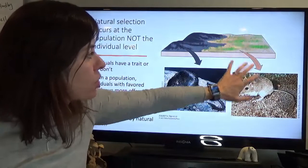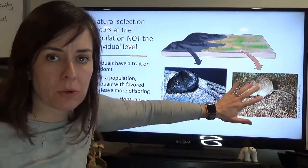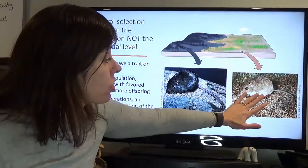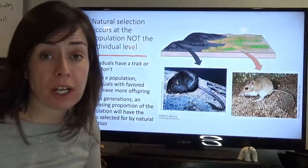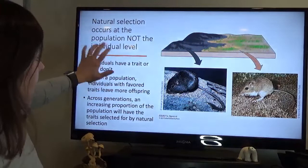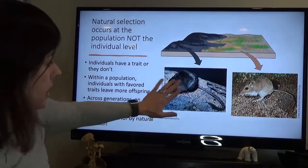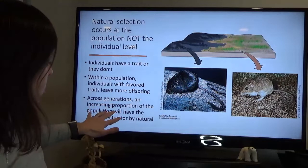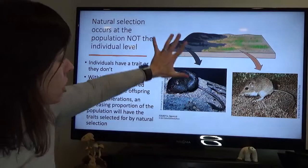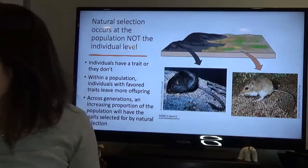Similarly, in the lighter habitat, predators could see darker individuals better, so they were removed from the population, leading to a directional shift toward the lighter phenotype. That's how natural selection acts — at the population level. Within a population, individuals with favored traits leave more offspring, and across generations an increasing proportion of the population will have the selected traits: dark fur in one case, lighter fur in the other.